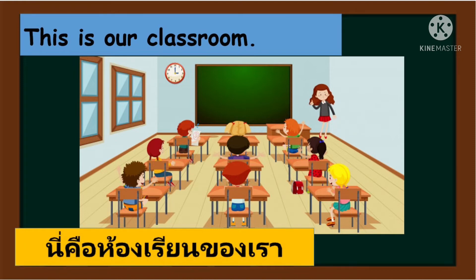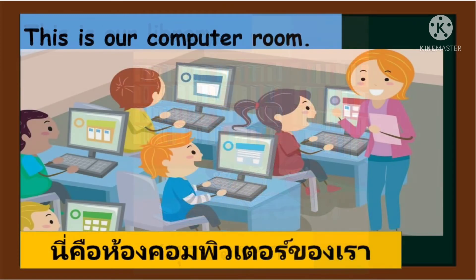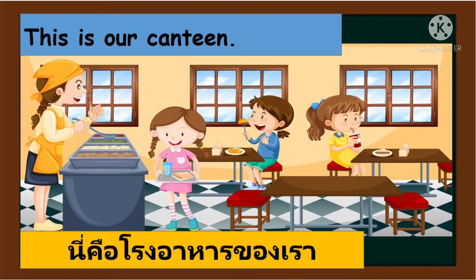Very good. This is our library. Again — this is our library. Excellent. Next, this is our computer room. Again — this is our computer room. Nice one. Next, this is our canteen. Again — this is our canteen.